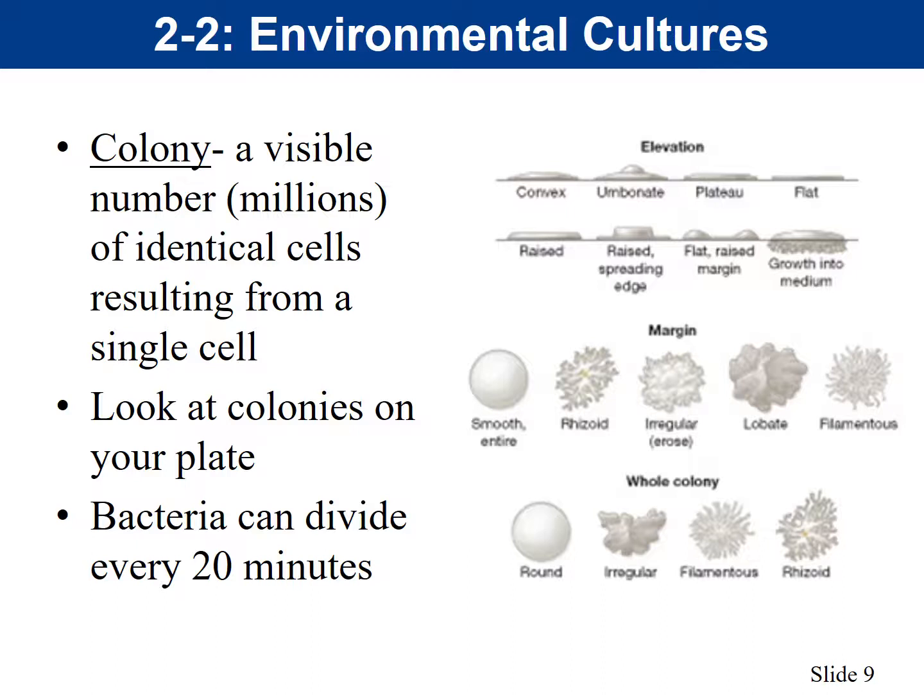We allowed the plates to grow for 48 hours at 37 degrees Celsius. Remember that 37 is human body temperature, and most bacteria — especially the ones we care about — grow optimally at that temperature. When you look at your plates, you'll see colonies: visible masses of millions of identical cells resulting from a single cell. Each little dot represents one bacterium that divided asexually — from one cell into two, two into four, and so on.